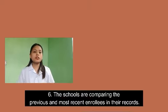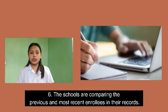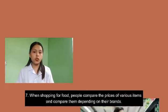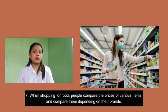Number 6: Schools are comparing the previous and most recent enrollees in their records. Number 7: When shopping for food, people compare the prices of various items and compare them depending on their brands.